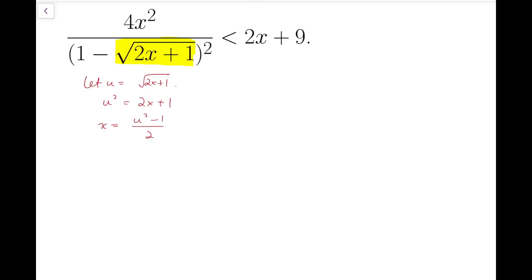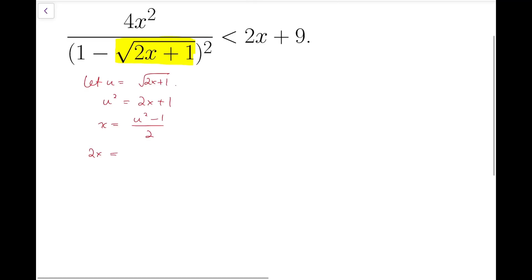Now apart from rewriting the yellow part to be u, I'm also going to rewrite other parts in terms of u. So 4x squared is actually 2x whole squared. So I'm going to move the two back to the left hand side. 2x equals u squared minus 1, so that means 4x squared is actually u squared minus 1 whole squared.